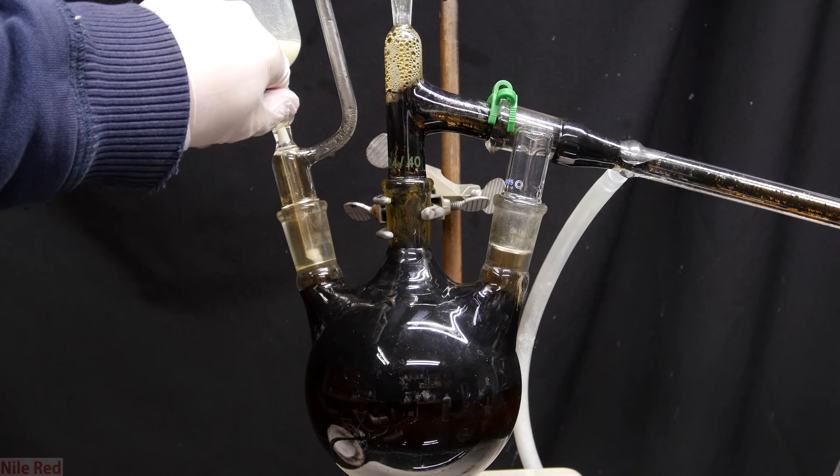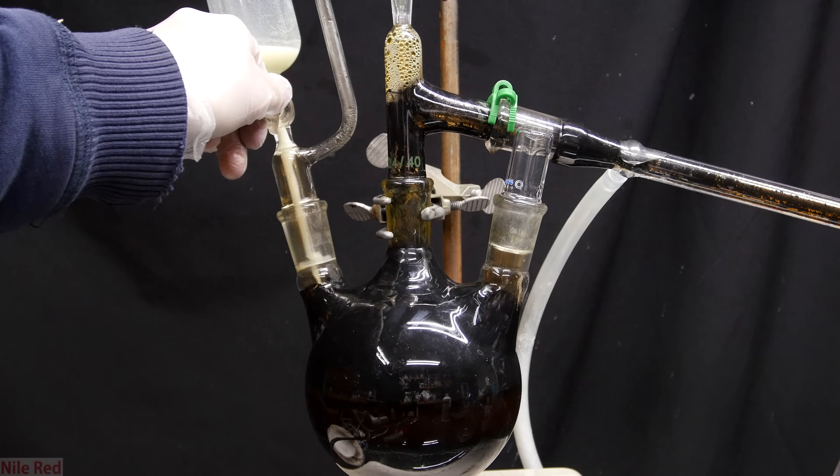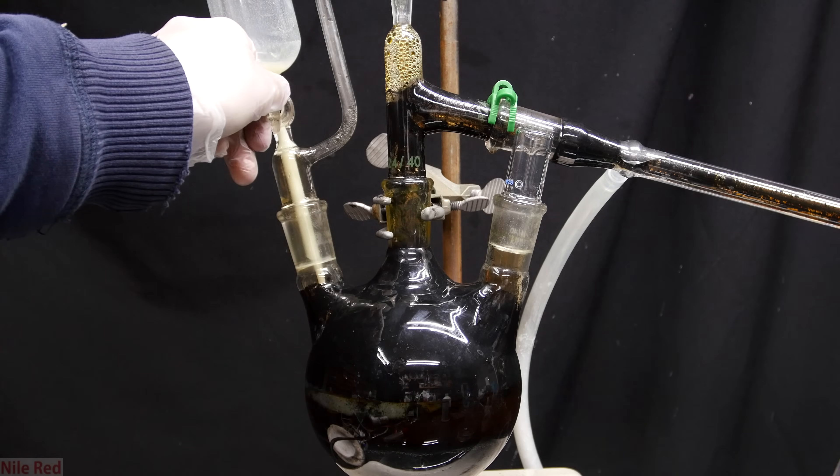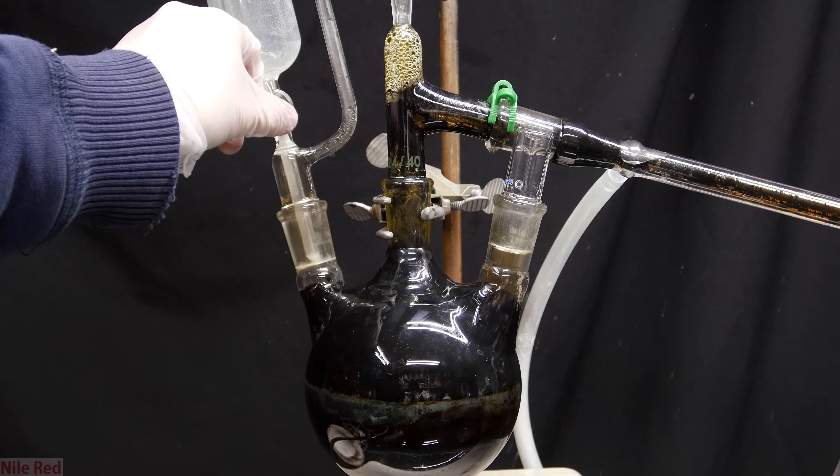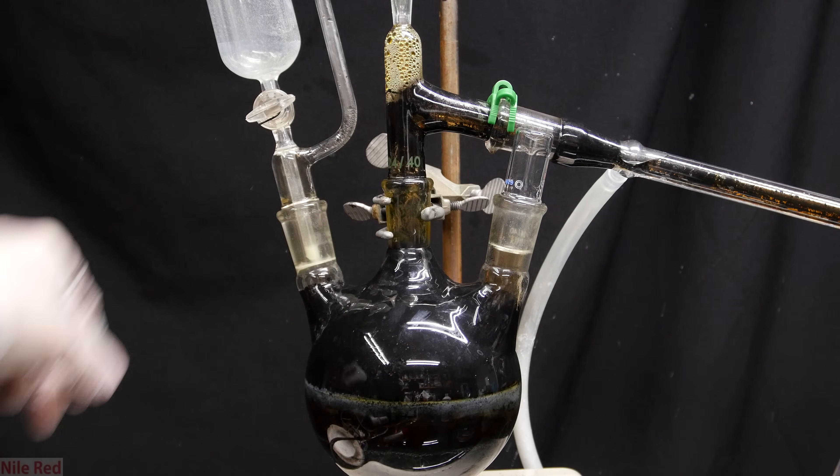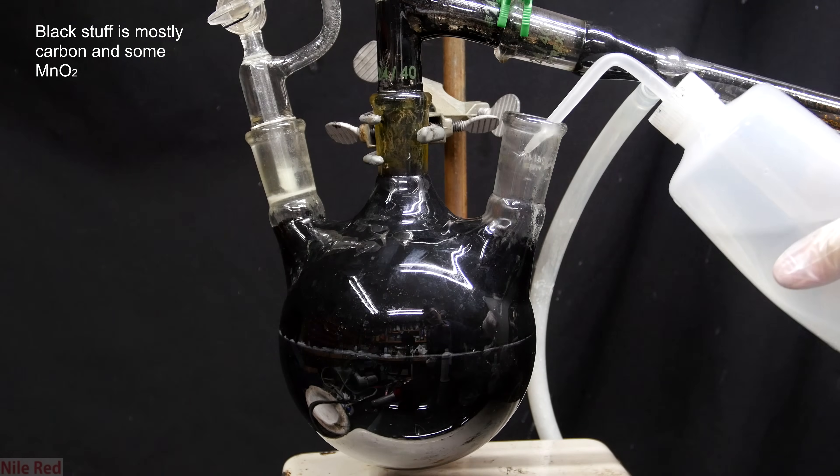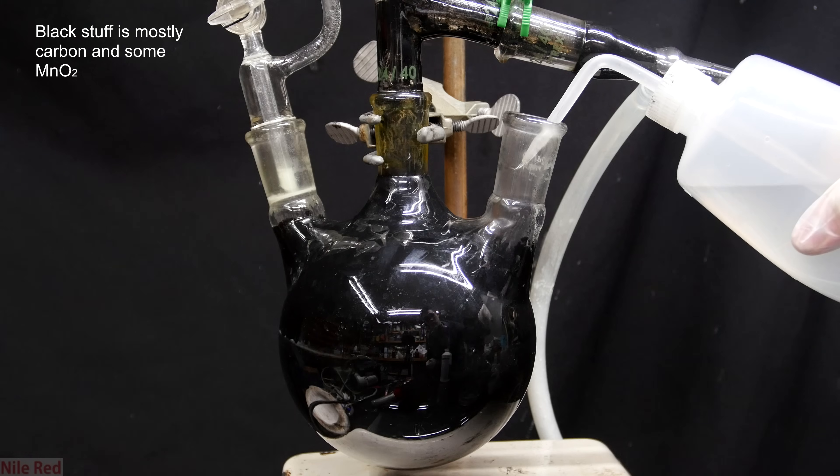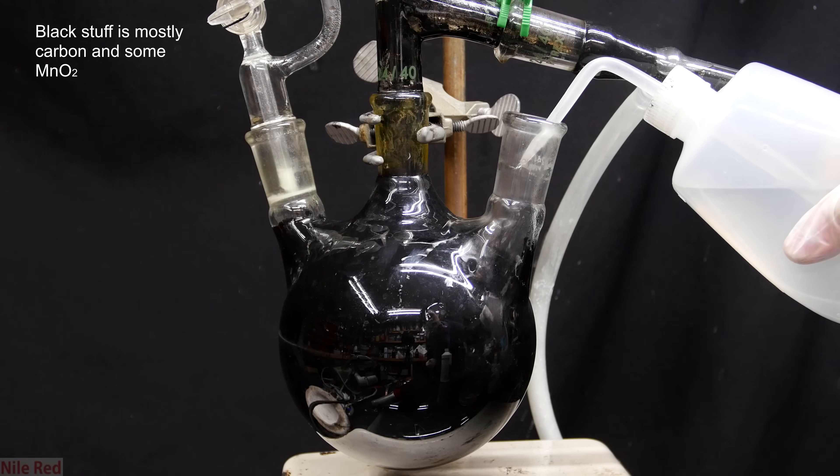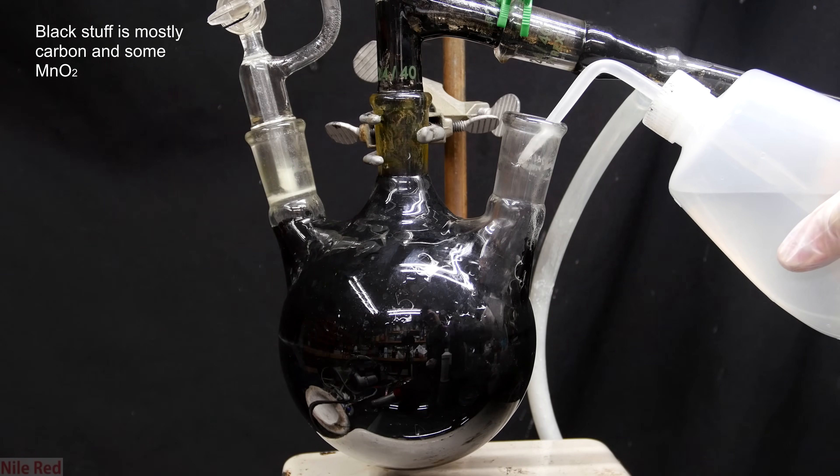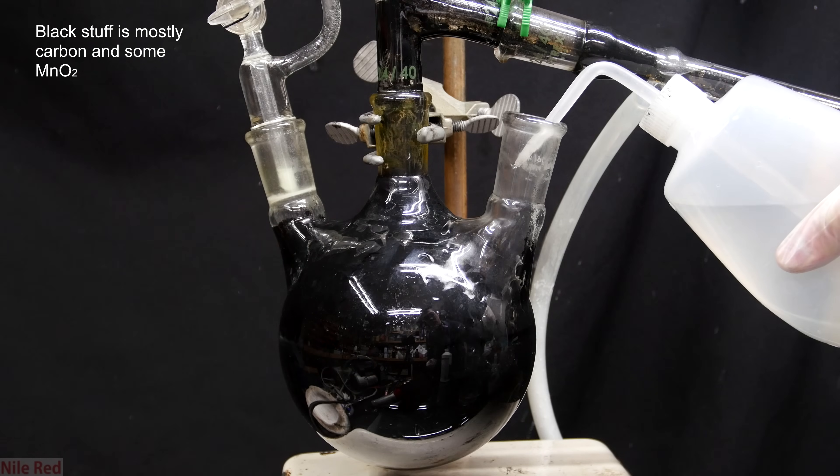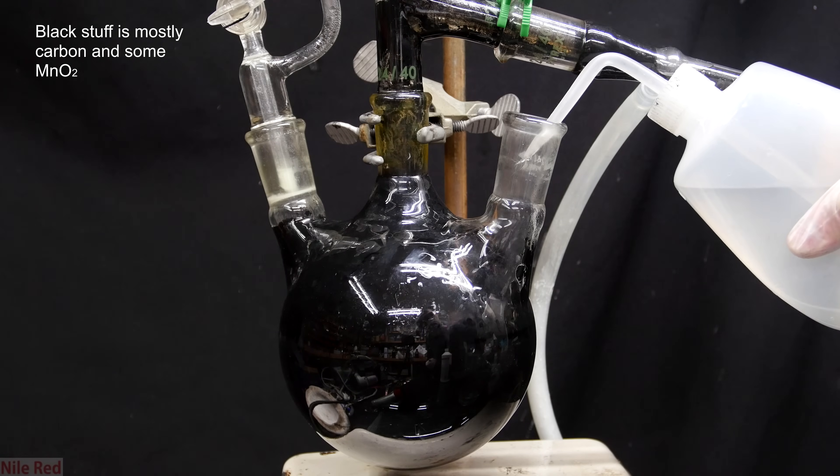Now we need to neutralize the contents of the flask. To do this, we start off by adding the sodium thiosulfate solution that was in the addition funnel. Surprisingly, there wasn't much bromine left over so that small amount of sodium thiosulfate solution actually neutralized it all. I then just use a squirt bottle with some water to clean off the walls and we can see that there's no orange bromine vapor.